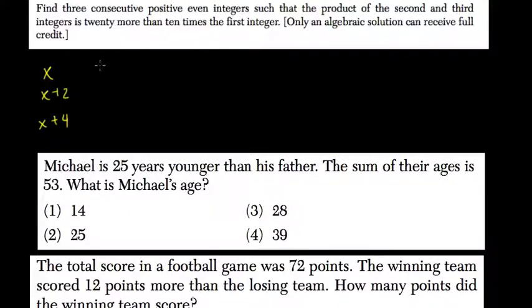They tell us that if we multiply the second and third - x plus 2 is the second number, x plus 4 is the third number - that equals 20 more, so 20 plus 10 times the first integer.